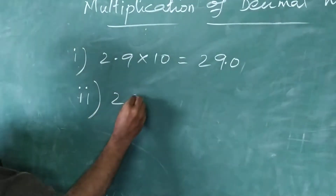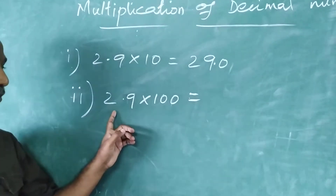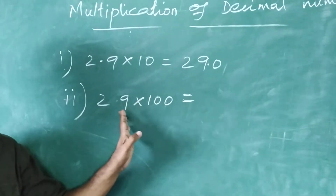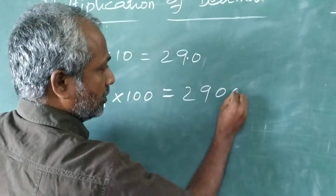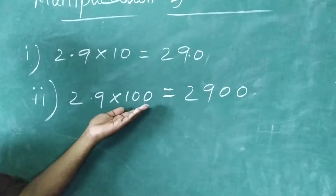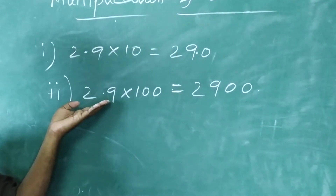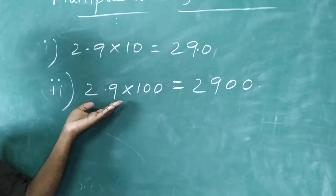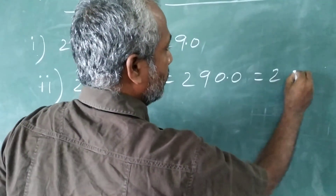Same number, I am going to multiply with 100 now. 2.9 into 100 — directly multiply first: 29 into 100 equals 2,900. But among those two numbers, one is a decimal. After the decimal, there is only one place. So you take the decimal from right to left one place, and the answer will be 290.